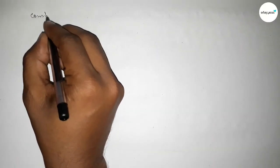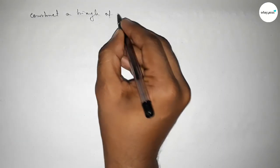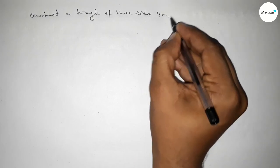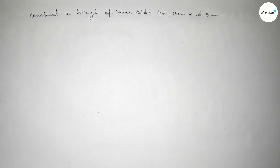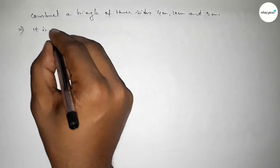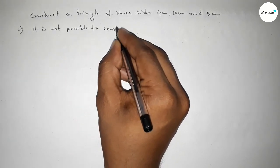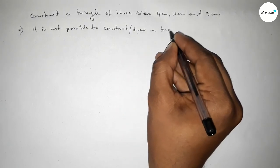Hi everyone, welcome to SI Share Classes. Today in this video we have to discuss the construction of a triangle of three sides: 4 centimeter, 10 centimeter, and 5 centimeter. So let's start the video. First of all, it is impossible to construct or draw a triangle by the help of these three sides.